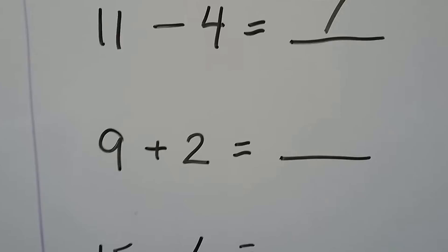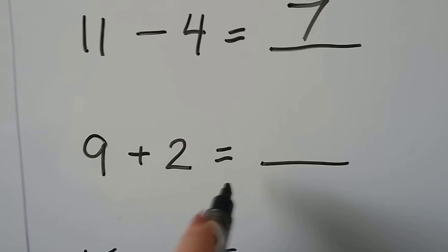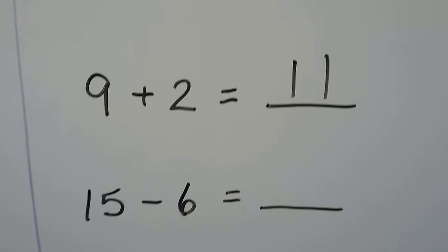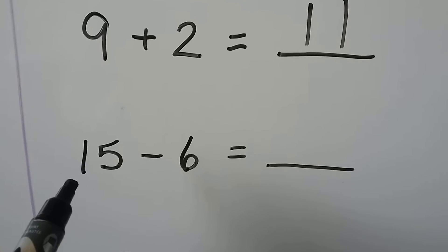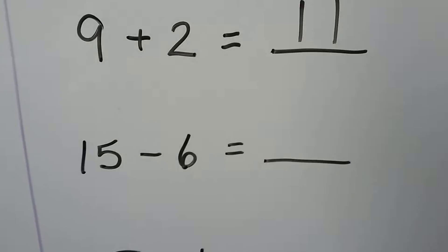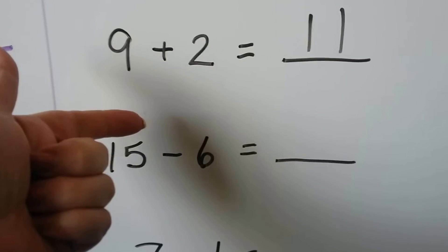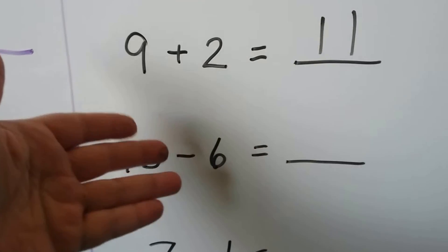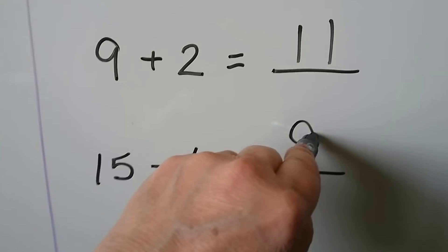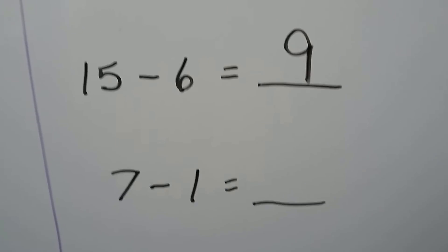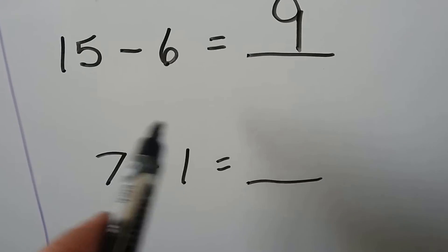9 plus 2 — we can count on the 2: 9, 10, 11. For 15 minus 6, we can start at 15 and count back 6: 15, 14, 13, 12, 11, 10, 9. For 7 minus 1, we can count back 1: 7, 6.